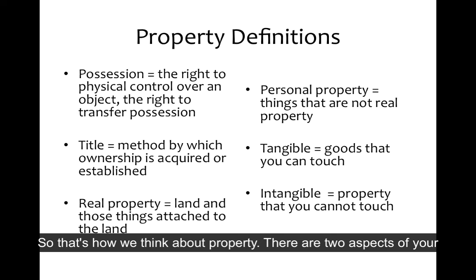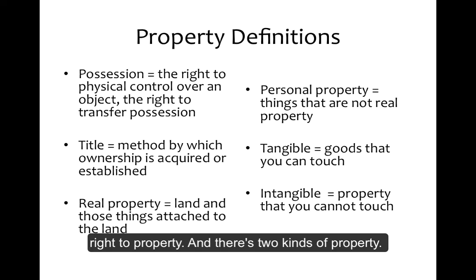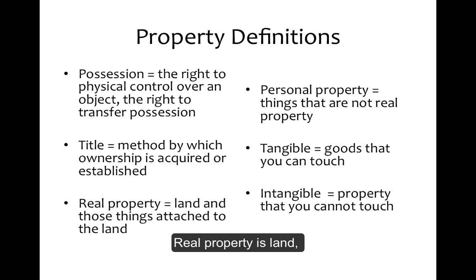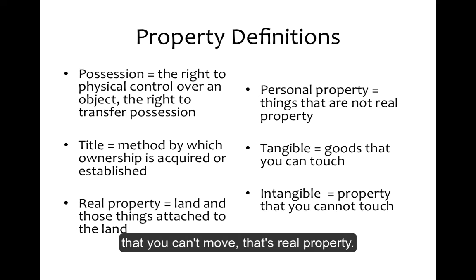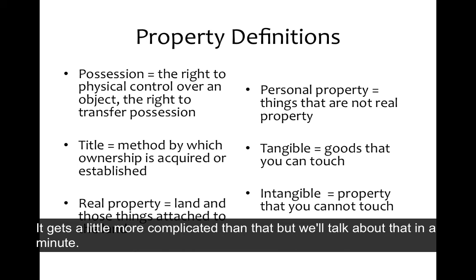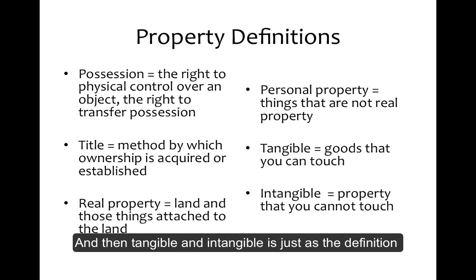There are two aspects of your right to property and there are two kinds of property. There is real property and there is personal property. Real property is land, your house, big structures that you can't move. Personal property is everything else. It gets a little more complicated than that, but we'll talk about that in a minute. Tangible and intangible is just as the definitions imply.